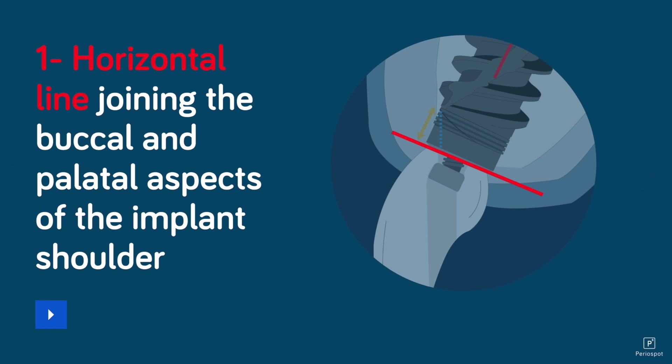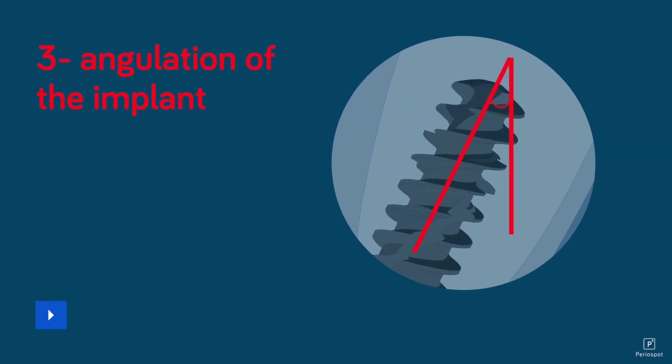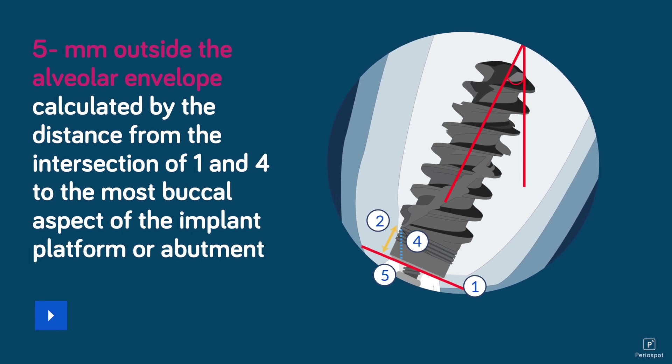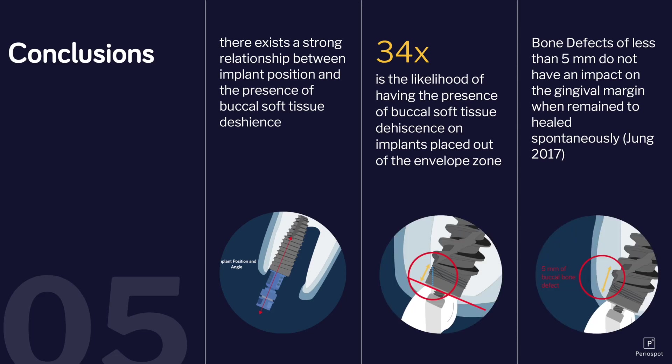The first reference was a horizontal line joining the buccal and palatal aspects of the implant shoulder. The second reference is the distance between that horizontal line and the first bone-implant contact on the buccal aspect between the implant and the bone. And of course, the angulation of the implant — because with this information we know the positioning of the implant, whether it is positioned toward the buccal or palatal. Also, the millimeters outside the alveolar envelope, calculated by the distance from the intersection of points one and four and the most buccal aspect of the implant platform or abutment. With this information, you will know the likelihood of having a dehiscence considering how much of the implant is outside the envelope.